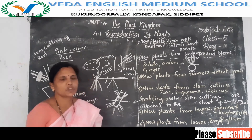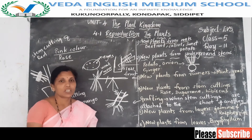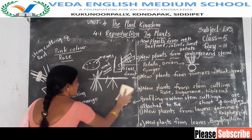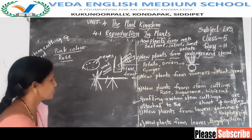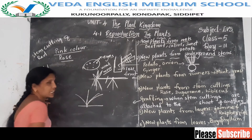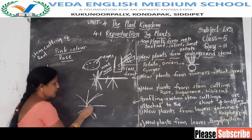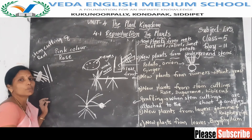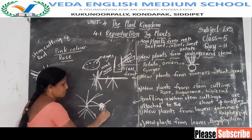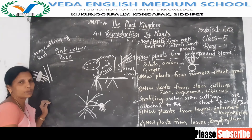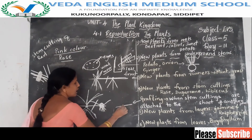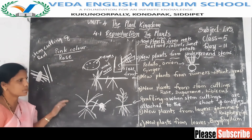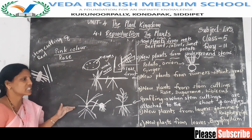Next, new plants from layers. Jasmine and raspberries have many branches very close to the earth. Take one branch, bend it, and cover it with moist soil. After a few days, new roots develop from that place. Separate the new plant from the mother plant and plant it in another place, where it grows as a new baby plant. Jasmine and raspberries reproduce through layers.